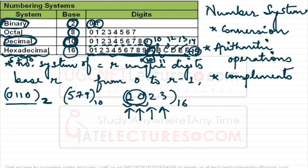FFF is the largest three-digit number in base 16. Now suppose we have an imaginary base 7 — what digits does it have? It would have 0, 1, 2, 3, 4, 5, and 6.